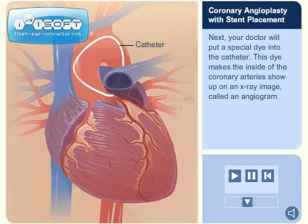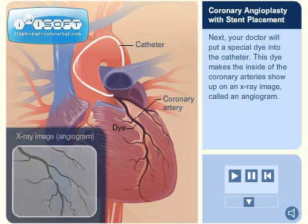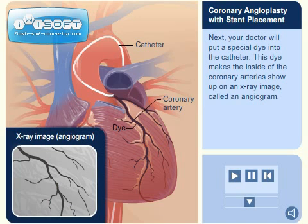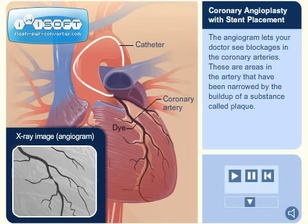Next, your doctor will put a special dye into the catheter. This dye makes the inside of the coronary arteries show up on an x-ray image called an angiogram. The angiogram lets your doctor see blockages in the coronary arteries.